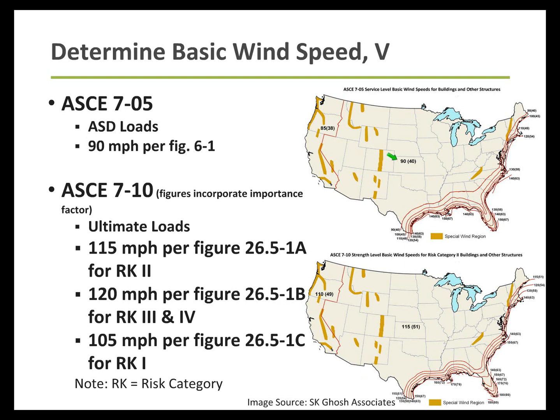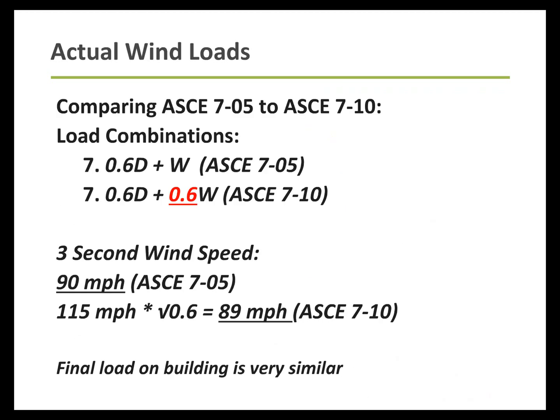What looks like we've jumped up in magnitude of wind loads — before, most of the country was looking at say 90 mile an hour wind speed, and now that's 115 mile an hour. It's not that the wind loads have gone up in magnitude; it's that we've switched from the baseline calculation being ASD to now being ultimate. In the end, there's really not that much of a difference in the net results of the wind loads.